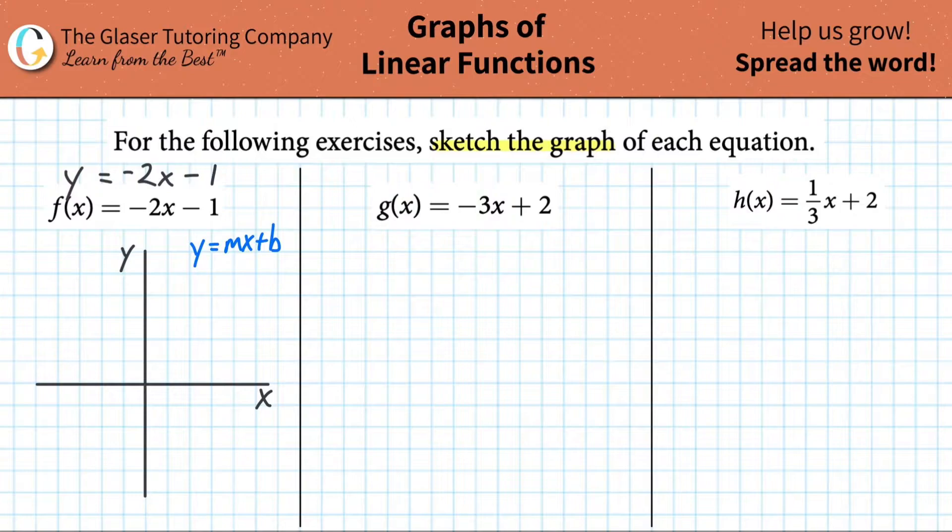So on your y-axis here, find where negative 1 is. Remember, that's the origin, that's 0, 0. So negative 1 would be located just beneath it. Now what you're going to do is then apply, basically, the slope to it. Relative to the y-intercept, we're now going to plot the slope.